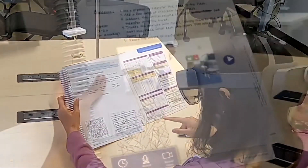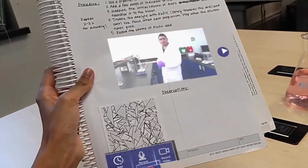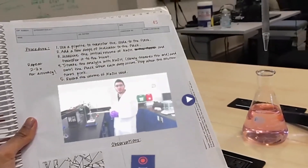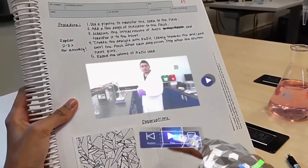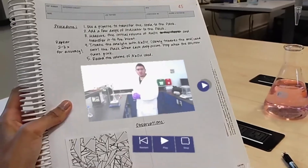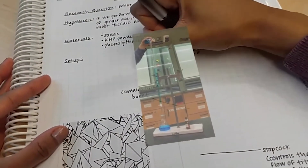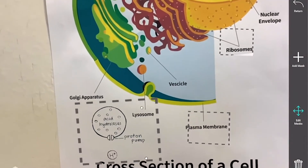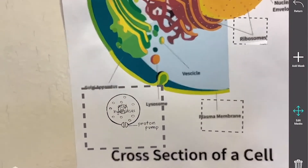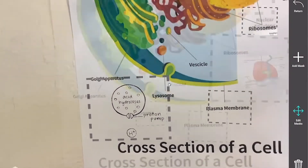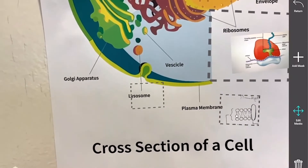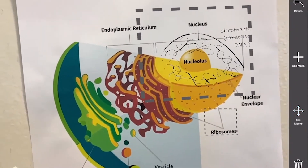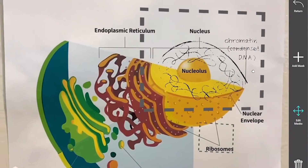This immersive chemistry lab notebook allows students to integrate a variety of digital media with paper using head-worn AR. They can insert audio clips to record observations while performing an experiment, annotate digital images, and refer to a video for the procedure. In our biology poster example, an instructor extends an existing poster of a cell using clipping masks to selectively hide and show content. Students can expand the clipping masks to zoom into organelles and view details about their functions.